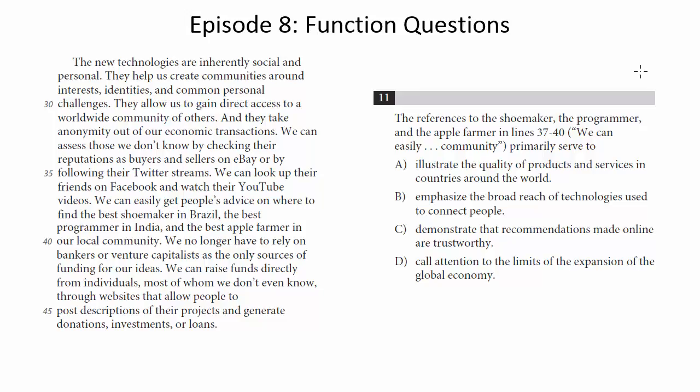So when you look at the question itself, you're going to see words like 'the references to the shoemaker, the programmer, the apple farmer primarily serve to.' That's an indication that we're dealing with a function question, but the biggest indication that we're dealing with a function question are the choices. And if you look at the first word of each choice, what do you see that they have in common?